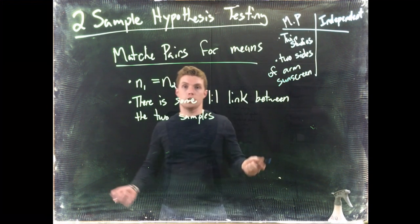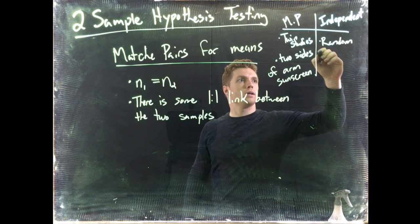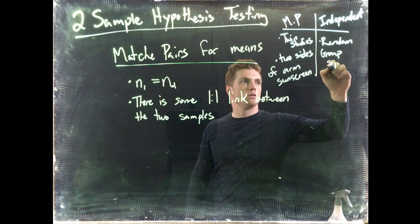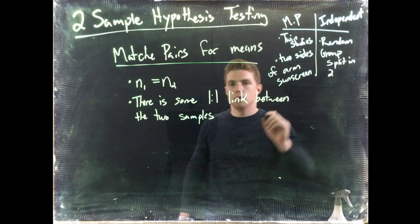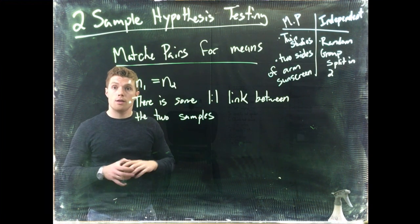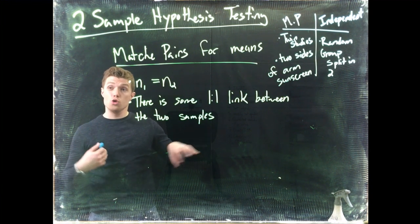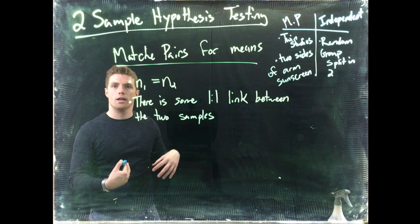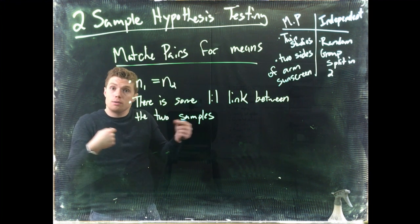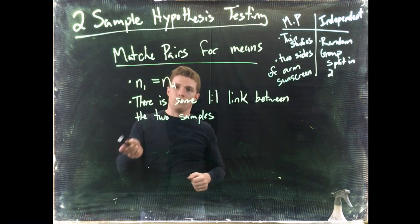We could look at the difference of the damage between the side with the sunscreen versus the side without sunscreen. So we put that up: two sides of arm sunscreen. What would not be a twin study? Like if we just had a random group, random group split in two. We do lots of studies this way. We randomly select a big group of people and then we randomly assign them to their treatments. But there's no like one-to-one link between these groups.